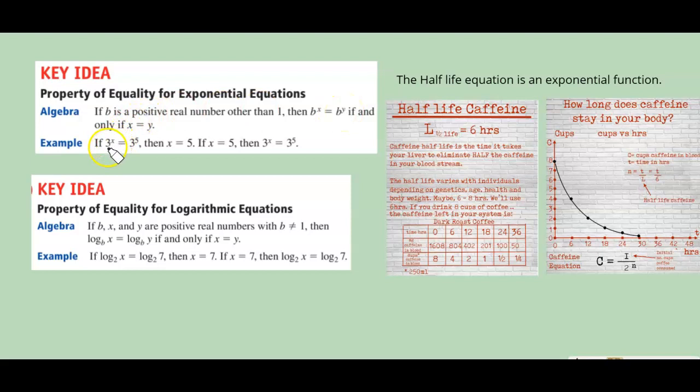Here's an example: 3 to the x equals 3 to the 5th. That means x equals 5 because they have the same base.